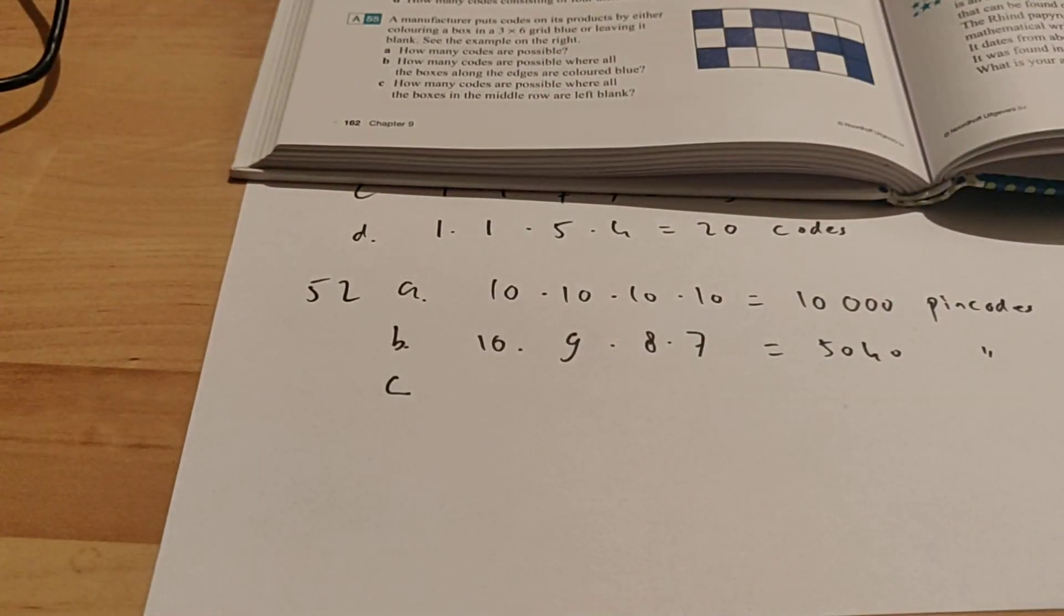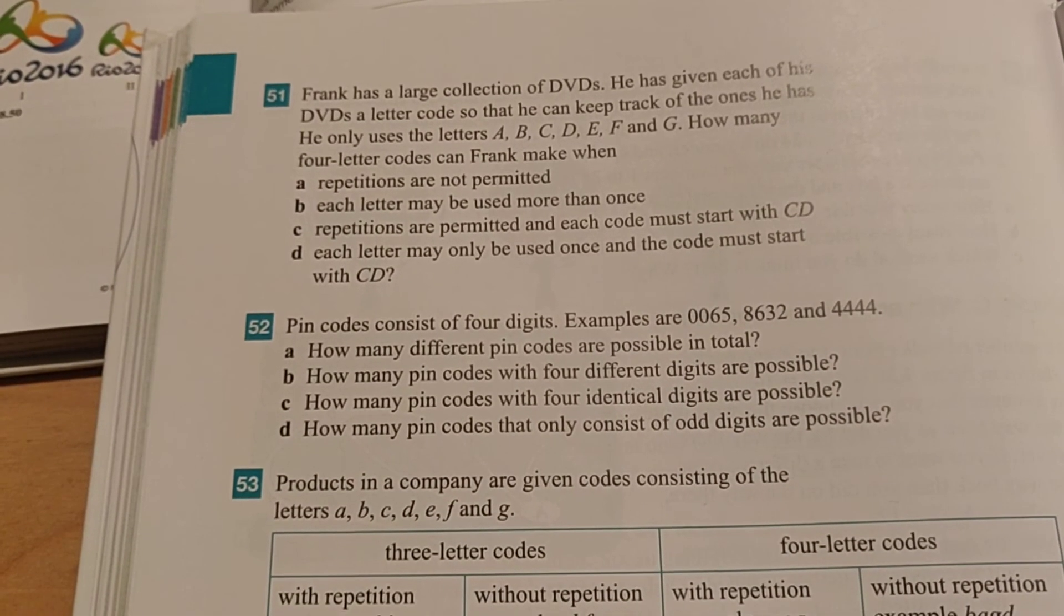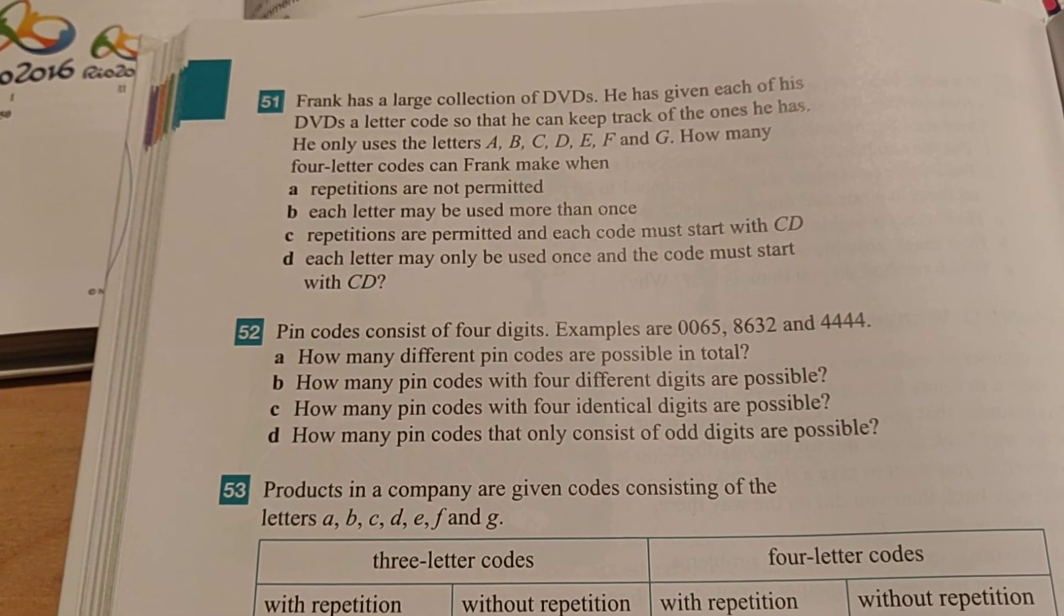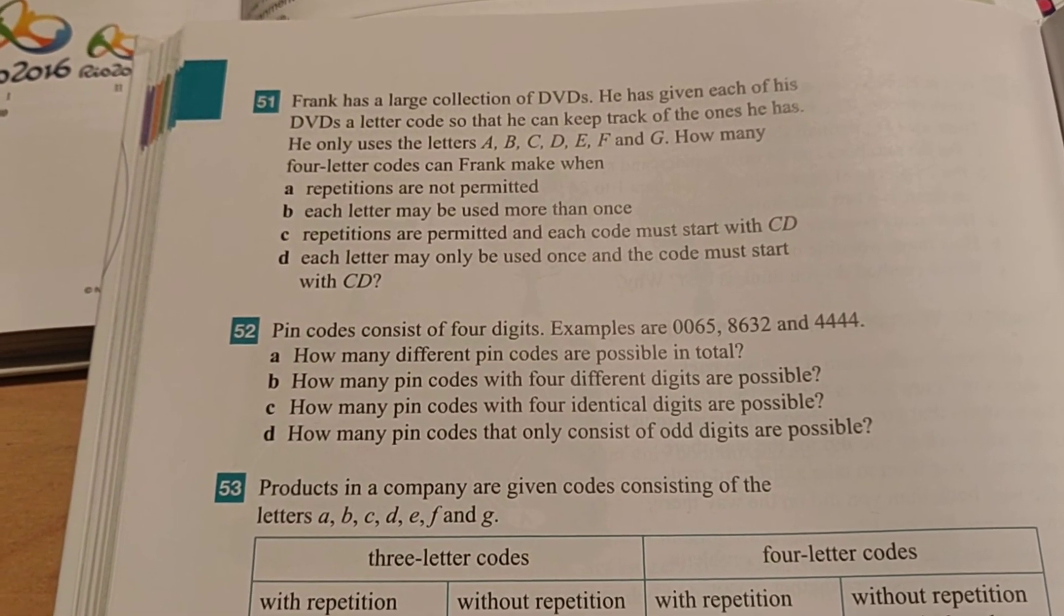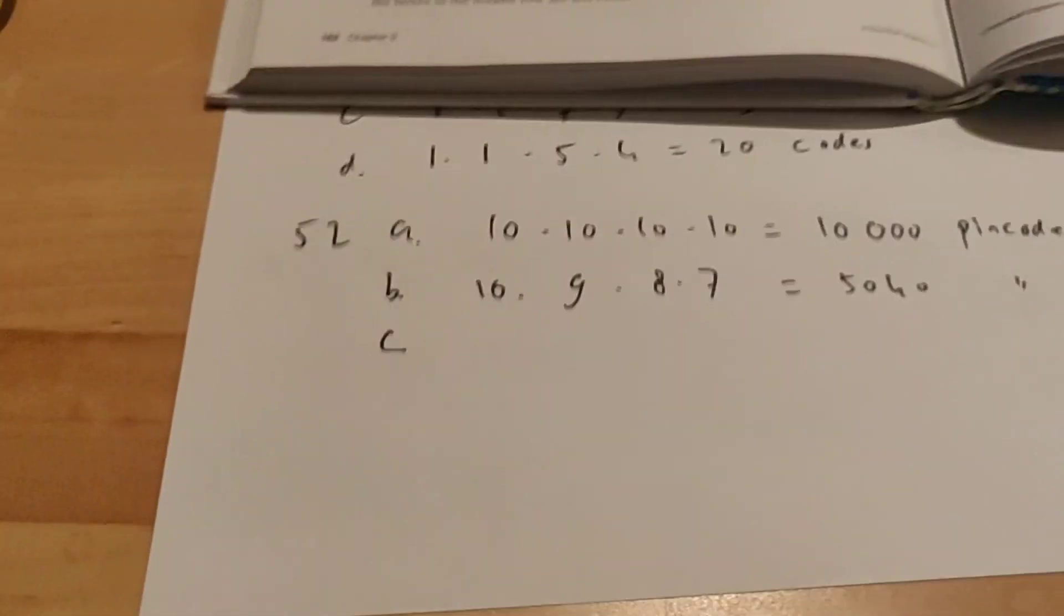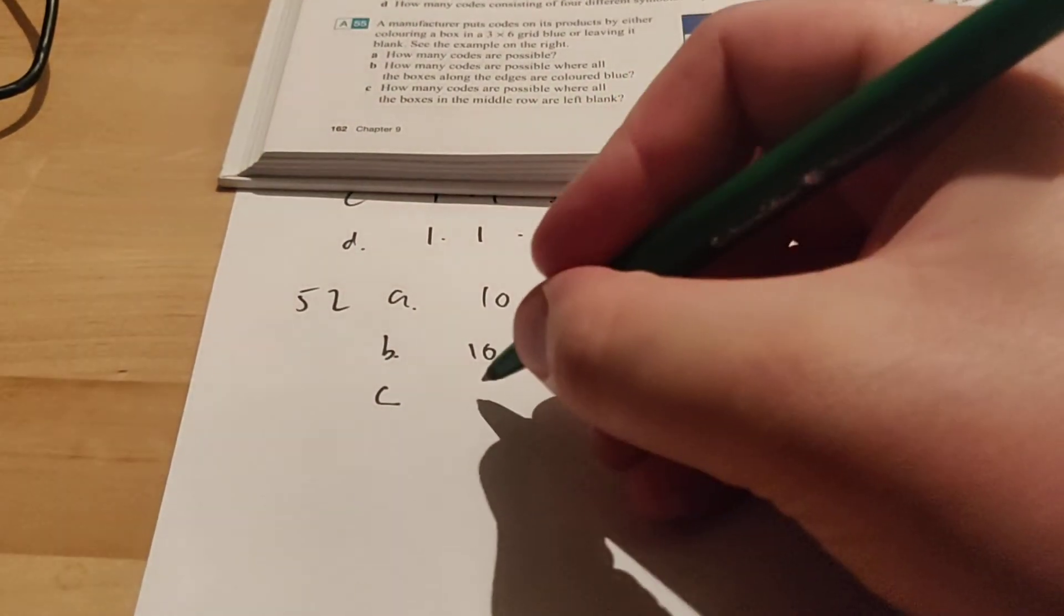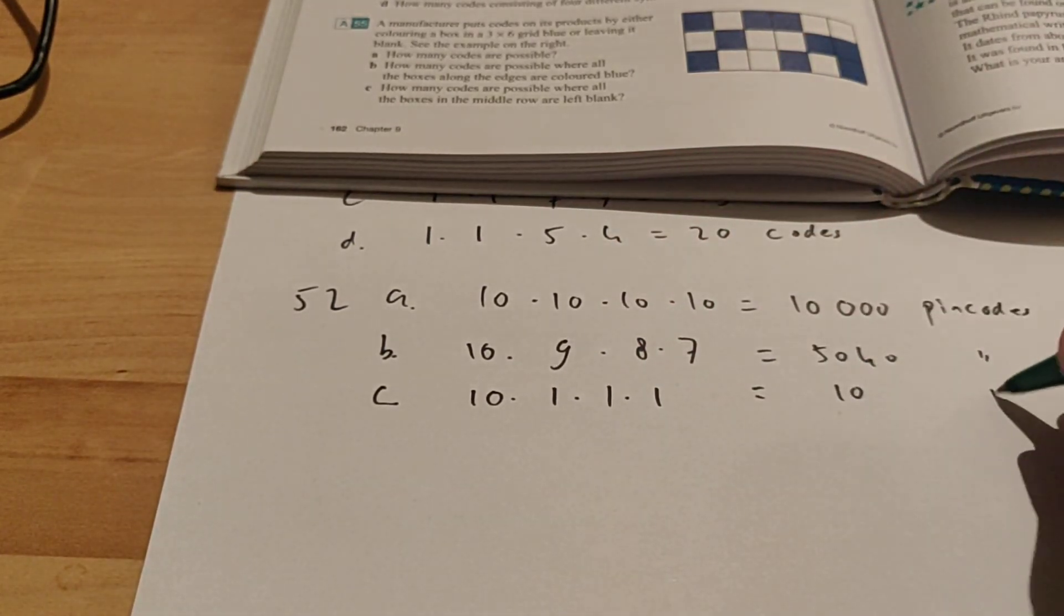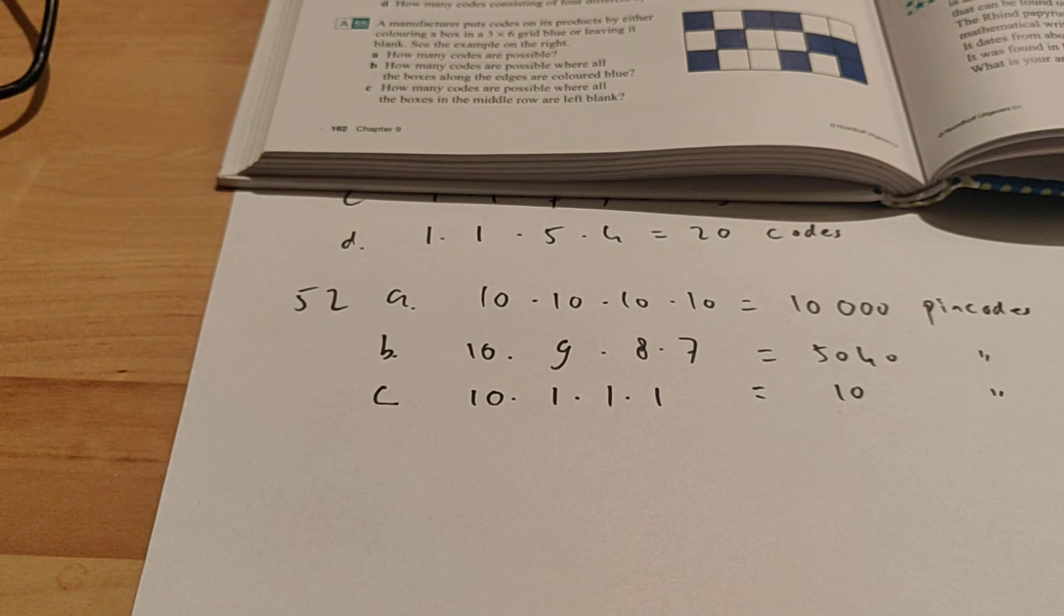Moving on to exercise C. There the question is, how many pin codes with four identical digits are possible? Identical means that they must be the same. So here we get, if you choose one, then the other ones must be the same. So you can make 10 pin codes where all the digits are the same.